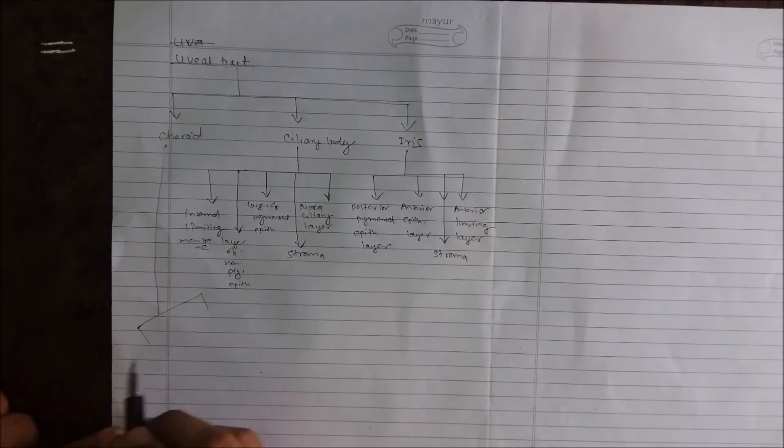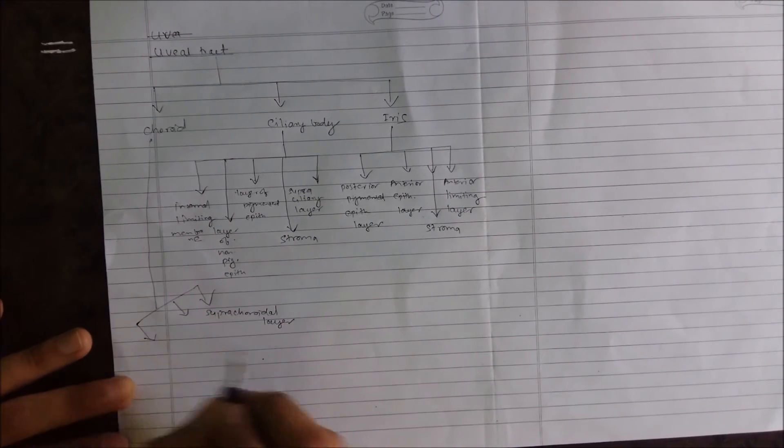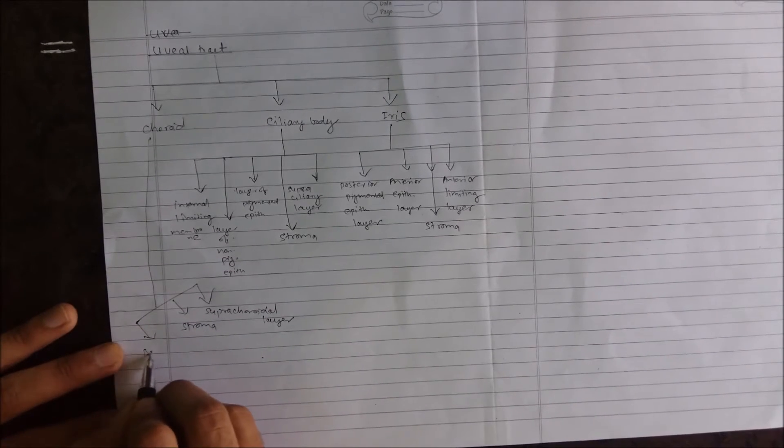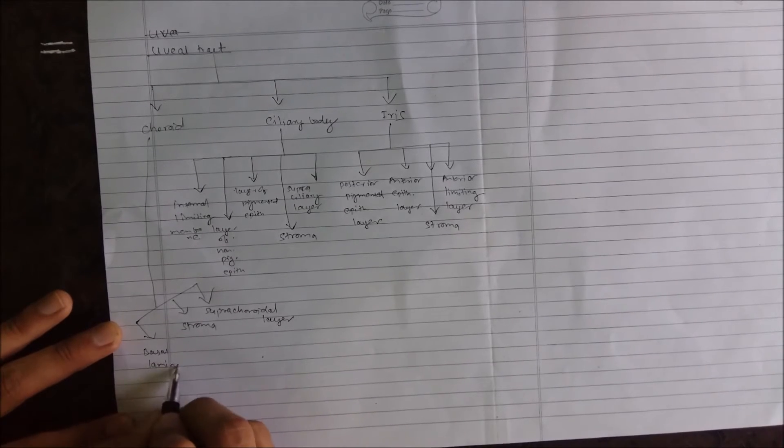Now let's classify the choroid. Choroid is simply divided into three layers: the uppermost layer is the supra-choroidal layer, the second is stroma, and the third one is basal lamina.